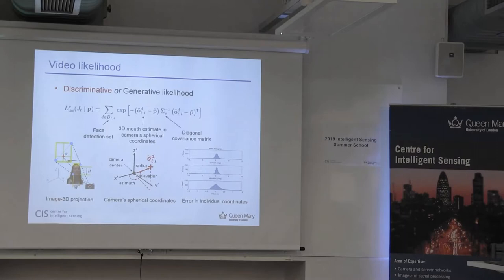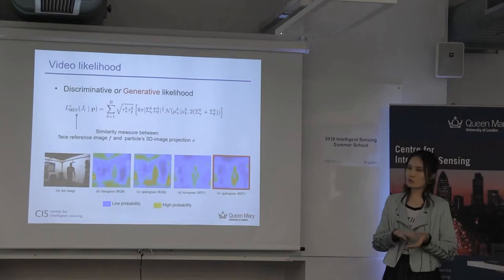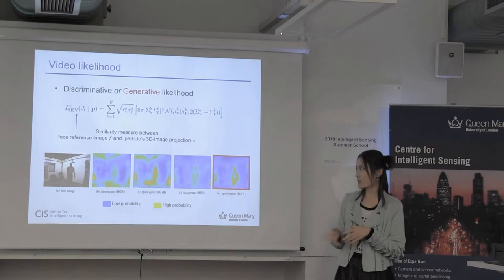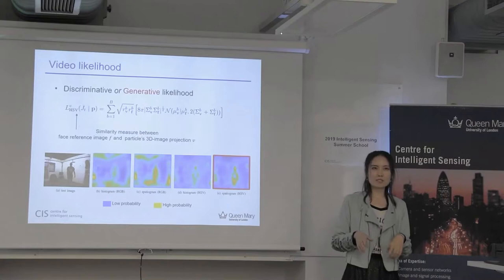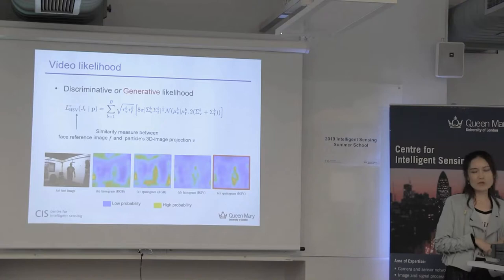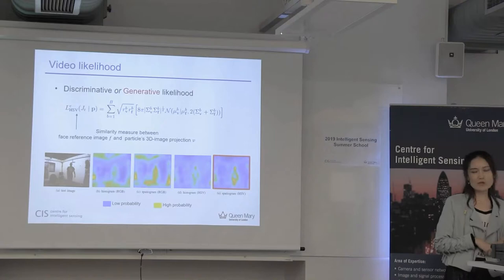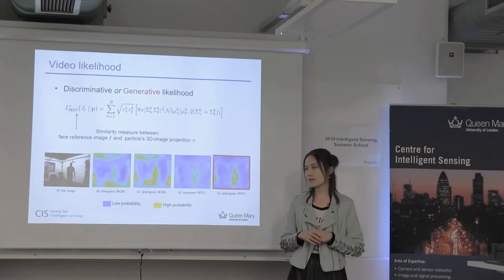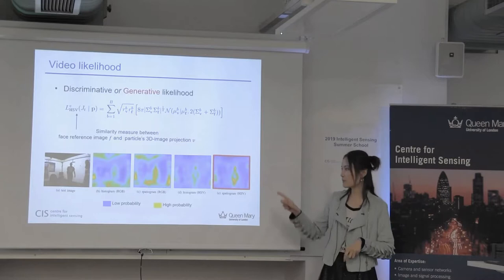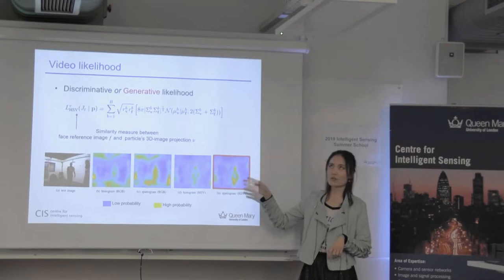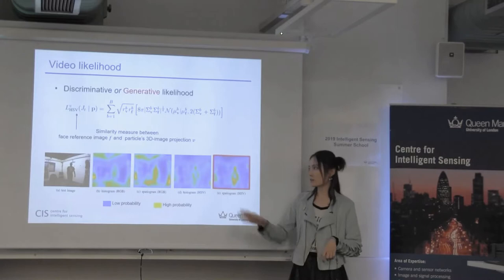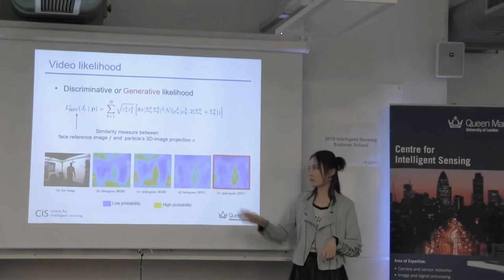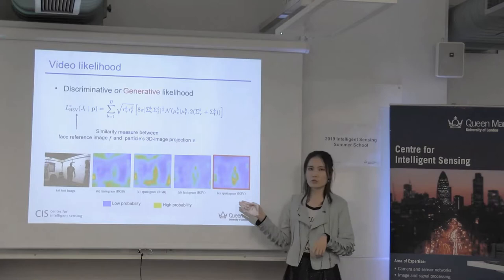When we don't have face detection, we use the generative model, which is the reverse of the discriminative model. Given a particle with a 3D hypothesis, we create a bounding box in 3D and project it onto the image plane, then measure similarity between the face reference image and the hypothesis. We evaluate different visual features in different color spaces, such as the histogram and spatialogram in RGB and HSV color spaces. The color map shows blue for lower probability of including the target and yellow for higher probability, and the spatialogram in HSV color space gives the most distinguishable similarity measure between background and target.